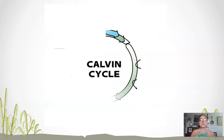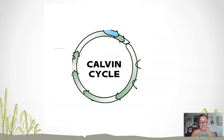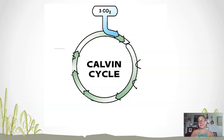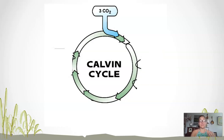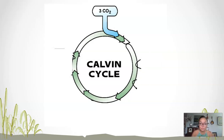The Calvin cycle is a cycle broken down into three steps — three stages, three phases. The first one is called carbon fixation, where the chloroplast will take carbon dioxide from air and incorporate it into an actual molecule. That is the first step: carbon fixation.